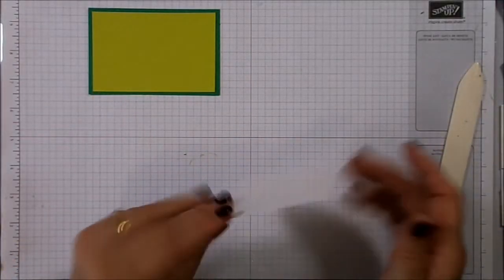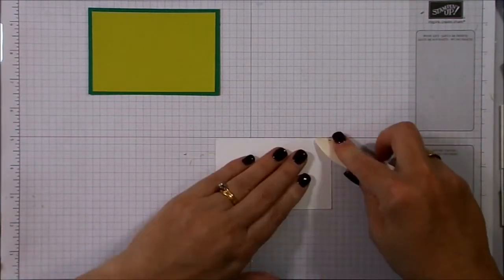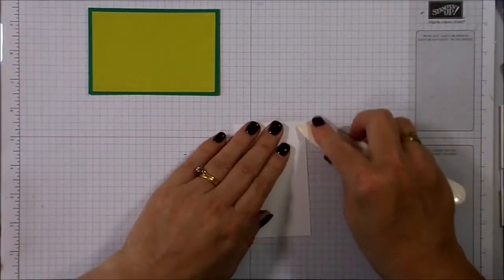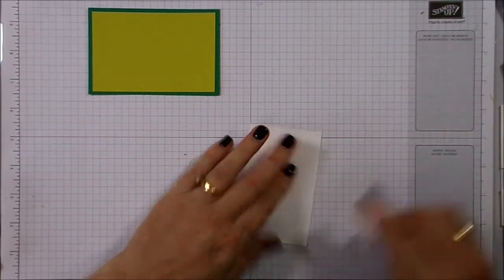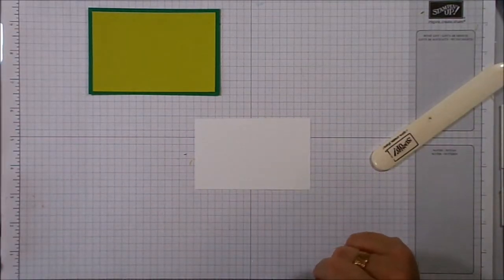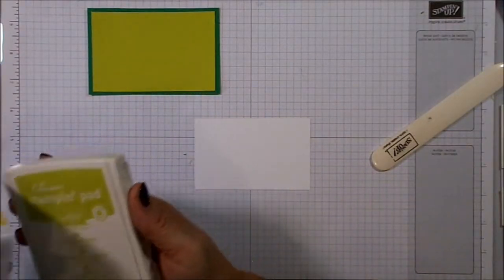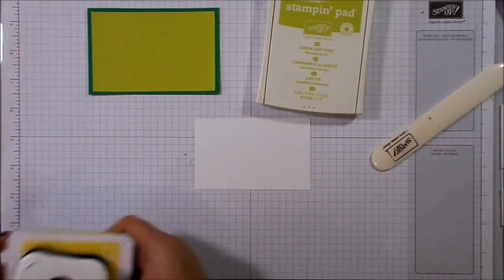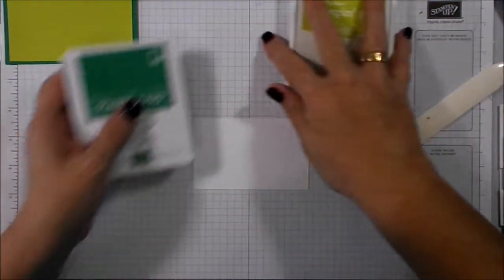So there we go. We've got a fairly good placement on that. However, with this piece, I will be sticking it on with some snail. But it's contraband snail because I haven't placed an order yet. I'm just trying to smooth out those edges a little bit. But we're going to stamp the front of the card before I actually pop it onto the base.